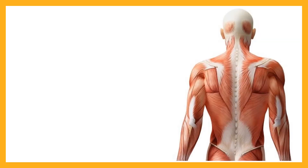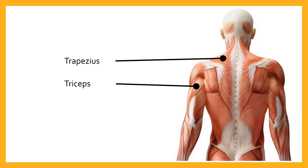Now let's look at the back of the human body. Right at the top, inserting into the back of the skull and running down the cervical and thoracic vertebrae, we've got the very large trapezius muscle — referred to as the traps. People do shoulder shrugs in the gym to build the size of the traps. On the back of the upper arm we've got the triceps: whereas biceps means two-headed, the triceps is a three-headed muscle that originates on the humerus and inserts on the ulna past the elbow.